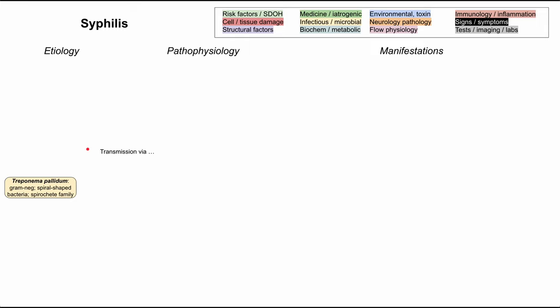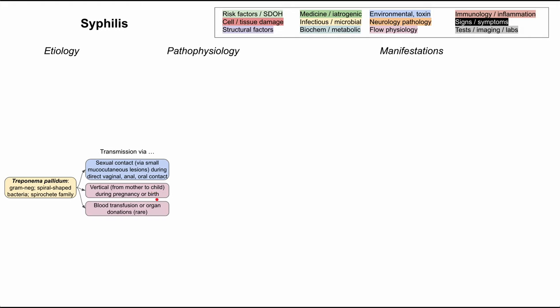It can be transmitted through a few different ways. By far the most common way to transmit syphilis is through sexual contact — through small mucocutaneous lesions. You can get syphilis from vaginal contact, anal contact, or oral contact. You can also transmit syphilis vertically, from mother to child during pregnancy or childbirth. In rare cases, you can transmit syphilis through blood transfusion or organ donations, but that's the most rare way.